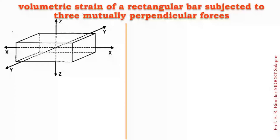Last time we had seen force acting in one direction, and today we are going to see when forces are acting in all three directions, how to find out the volumetric strain. Volumetric strain is equal to dV upon V — that is the change in volume divided by the original volume — similar to what we calculated in the last derivation.